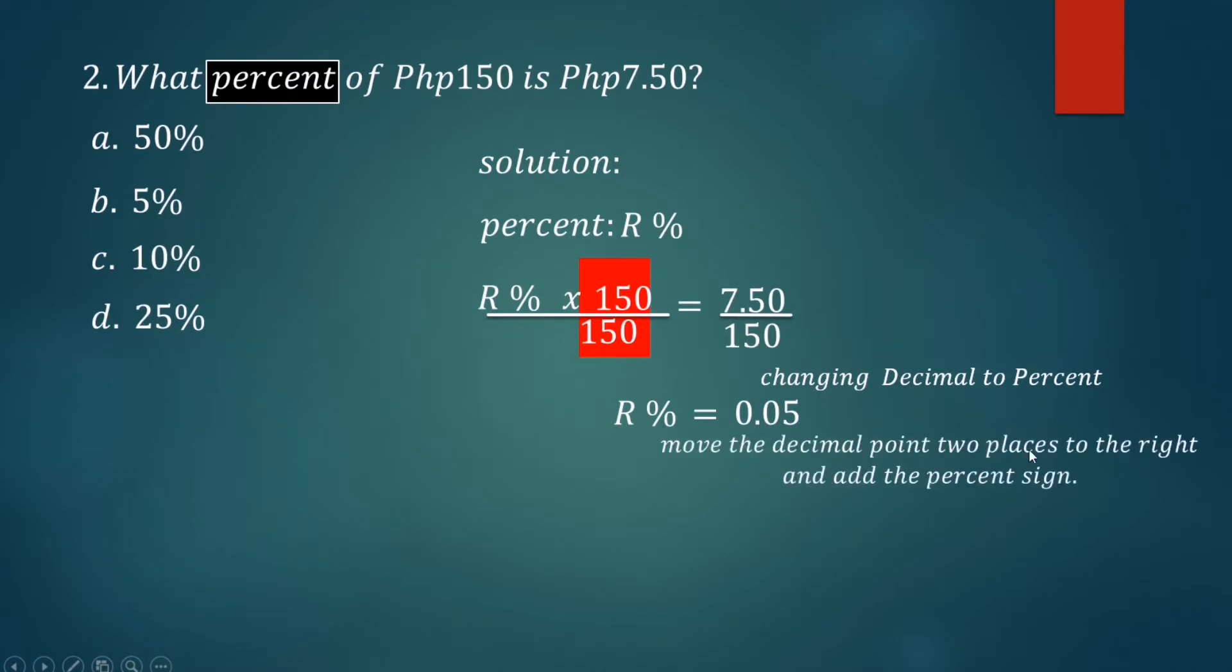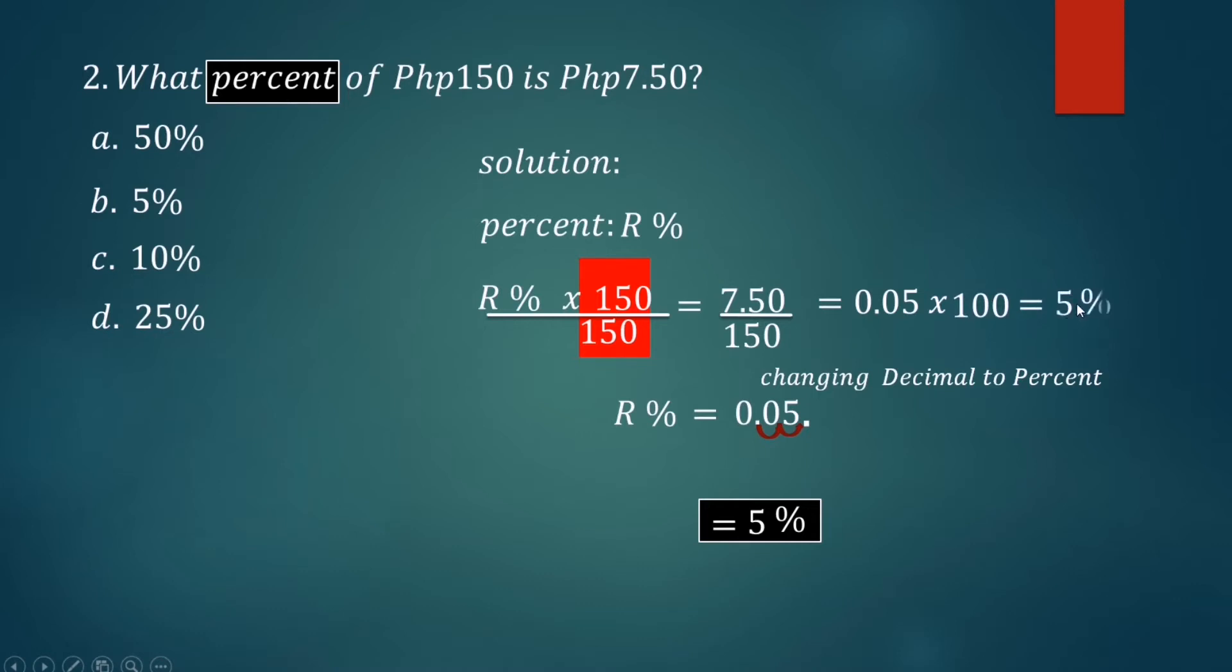For changing decimal to percent, move two places to the right - from this point one, two - then the value of percent is 5. Add the percent sign, that is 5%. We have another method: since percent means for every hundred, we multiply 0.05 by 100, that is 5, then add the percent sign, that is 5%. The answer is B.